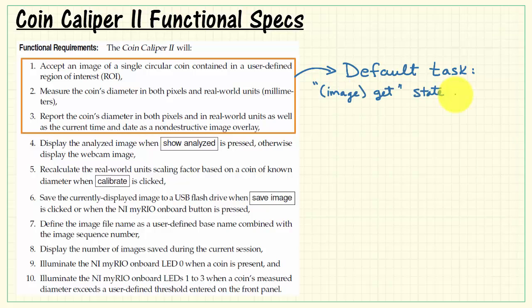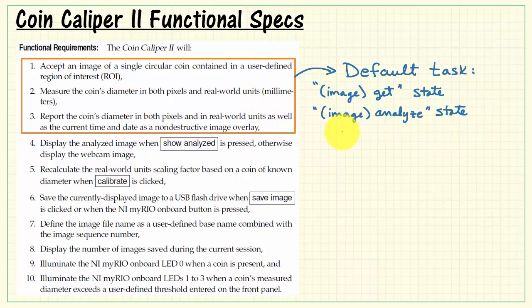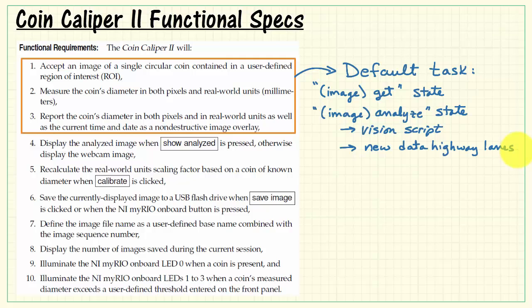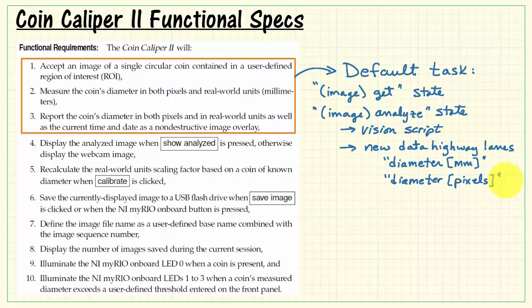Accepting an image is what happens in the image get state. The measurement takes place in the image analyze state. In particular, we will need to develop a vision script that can perform the diameter measurement. We will need two new data highway lanes — one for the diameter in millimeters, that's our real-world units, and the other for diameter in pixels.